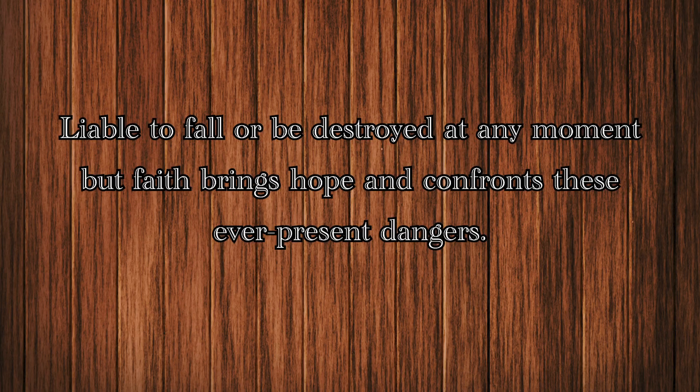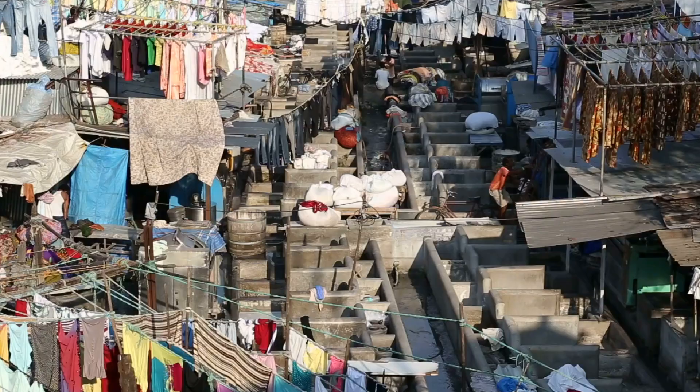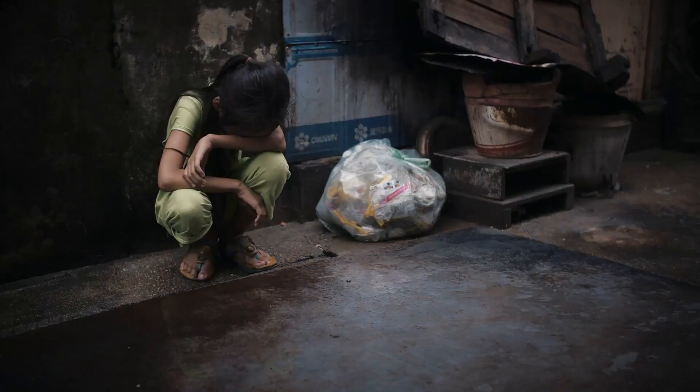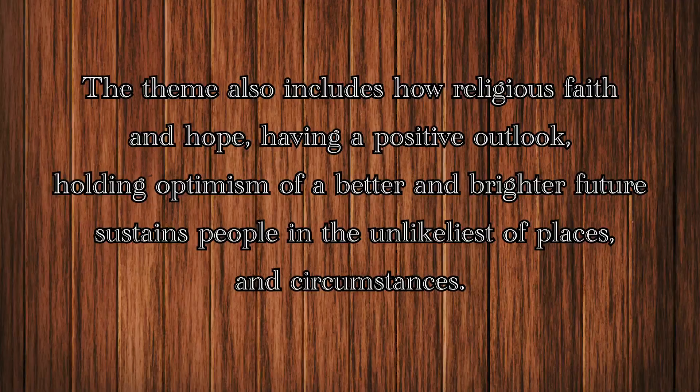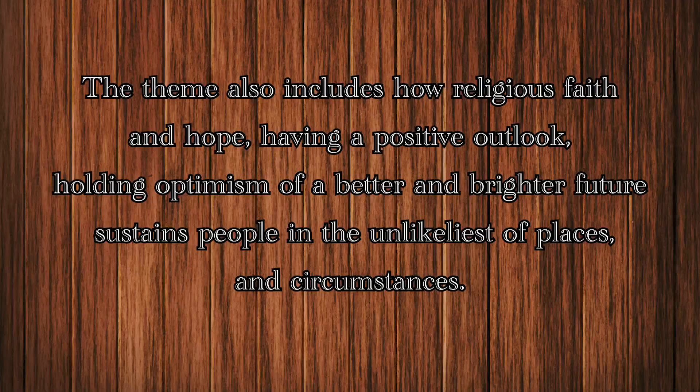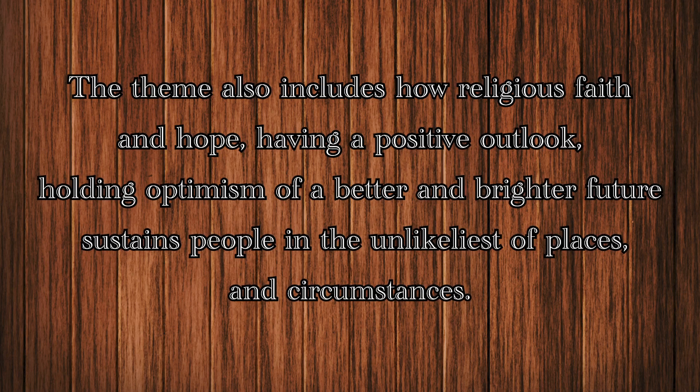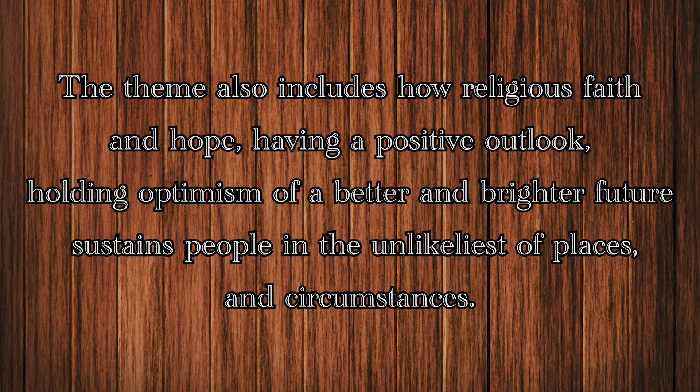Imtiaz Dhaka states that the poem is set in the slums of Mumbai, where people migrate from all over India in the hope of a better life. One of the themes that stems from this observation is the fragility and yet the endurance and strength of life and of hope. The theme also includes how religious faith and hope, having a positive outlook, holding optimism of a better and brighter future, sustains people in the unlikeliest of places and circumstances. And connected to this is how life exists and thrives in the unlikeliest of places and under the harshest of circumstances.